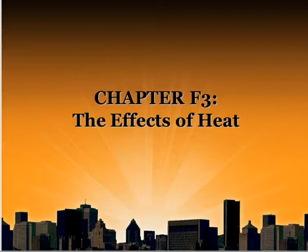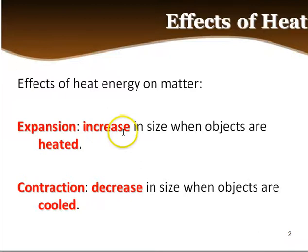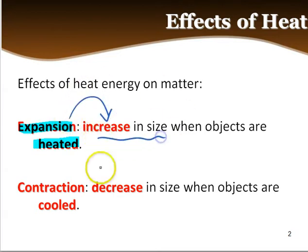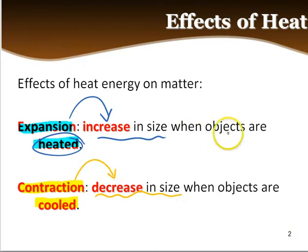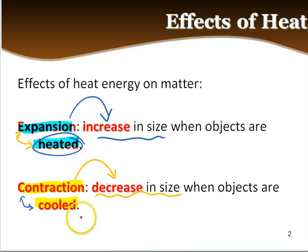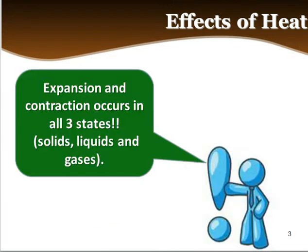We're going into the chapter on the effects of heat. There are two simple ideas we'll discuss. First, expansion: when objects are heated, expansion is an increase in size. The other is contraction, which occurs when the object is cooled — it is when the object decreases in size. So expansion and heating go together, contraction and cooling go together.